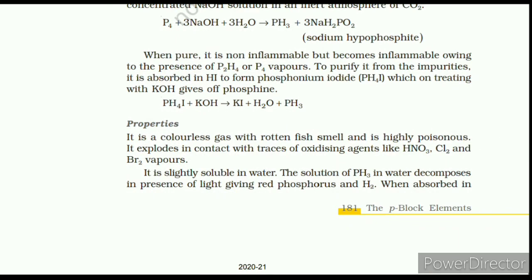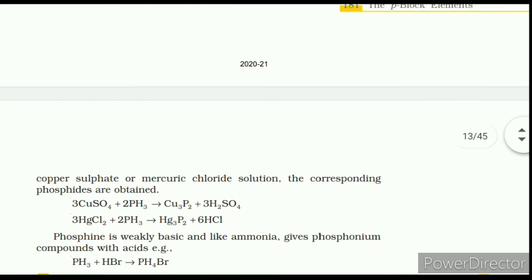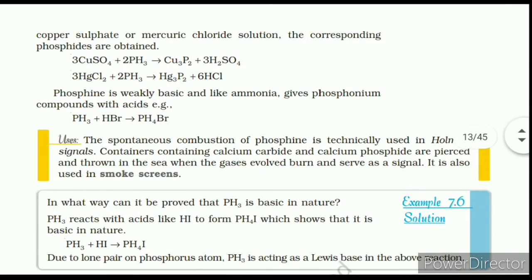The solution of PH₃ in water decomposes in the presence of light giving red phosphorus and H₂. When absorbed in copper sulfate or mercury chloride solution, the corresponding phosphides are obtained. Phosphine is weakly basic and, like ammonia, gives phosphonium compounds with acids. Spontaneous combustion of phosphine is technically used in Holmes signals — containers containing calcium carbide and calcium phosphide are pierced and thrown in the sea; when the gases evolve they burn and serve as a signal. It is also used in smoke screens.